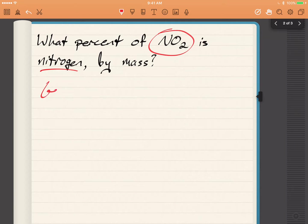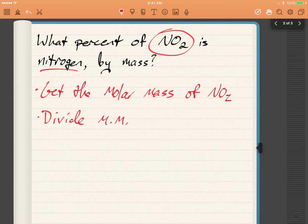What we're going to do here is get the molar mass of the compound, and then after we do that, we're going to divide the molar mass of nitrogen by that and convert to a percent.